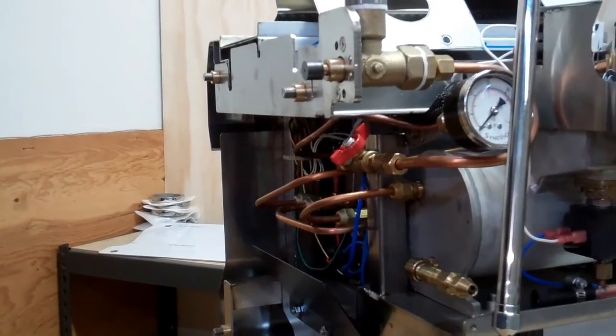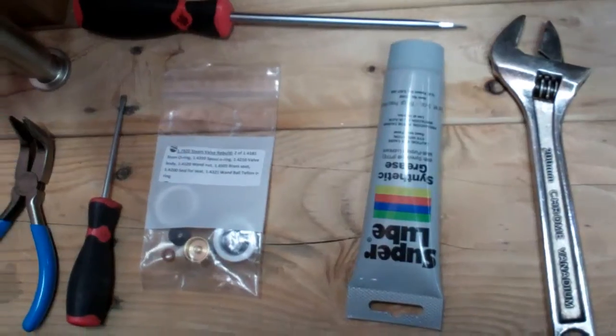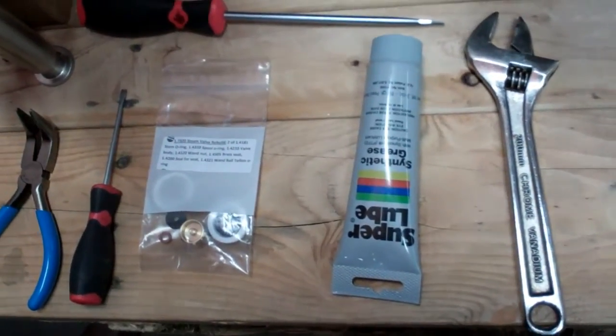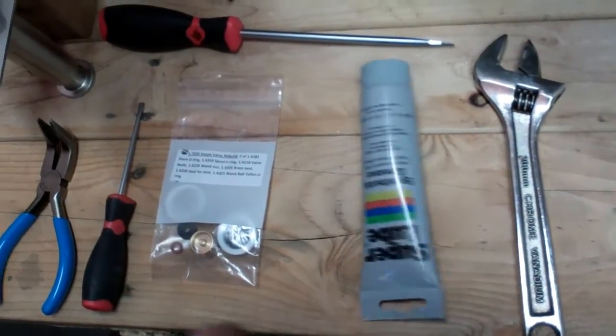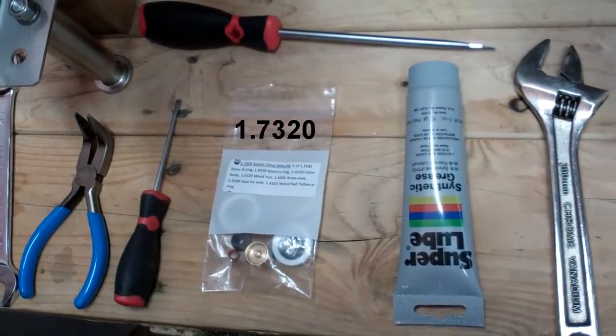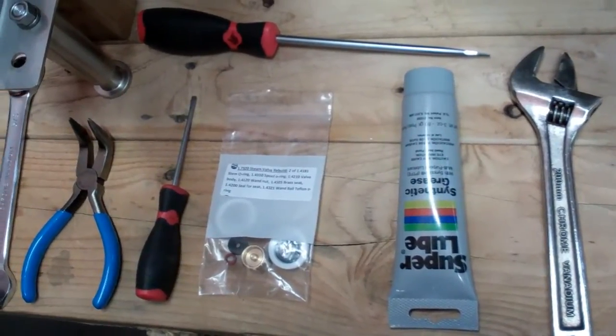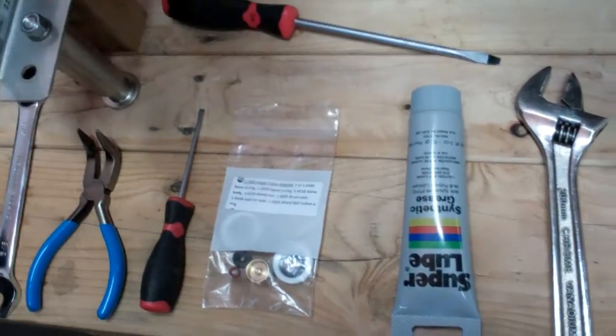This would isolate anything past the valve. To do the rebuild of the steam valve you need food grade lubricant, a steam valve rebuild kit 1.7320, a very small screwdriver, a pair of pliers, 5 eighths wrench, and a slotted screwdriver.